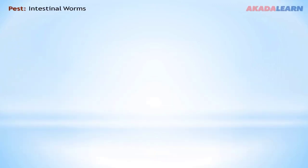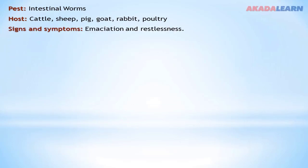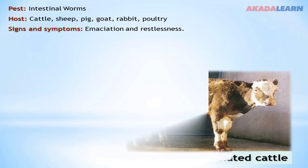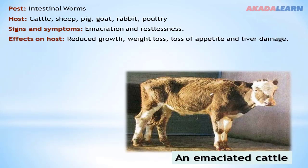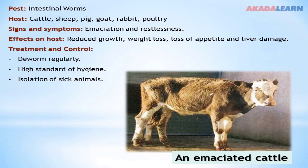Intestinal worms attack cattle, sheep, pigs, goats, and rabbits. Signs include emaciation and restlessness. Effects on the host include reduced growth, weight loss, loss of appetite, and liver damage. Treatment and control include regularly deworming farm animals, maintaining a high standard of hygiene, and isolating sick animals from healthy ones.